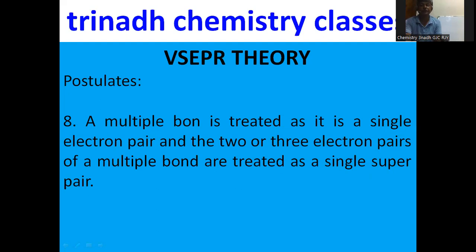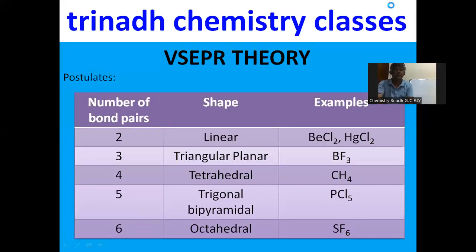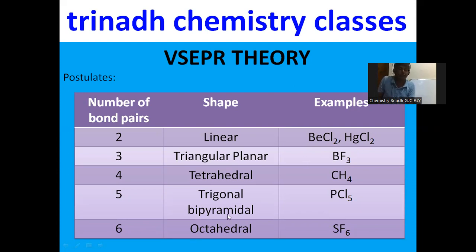The ideal shapes, assuming no lone pairs: if only two bond pairs are present, the shape is linear — examples are beryllium chloride or mercury chloride. If three bond pairs are present, the shape is triangular planar. Four bond pairs and no lone pairs gives tetrahedral. Five bond pairs and no lone pairs gives trigonal bipyramidal, and six bond pairs gives an octahedral shape.